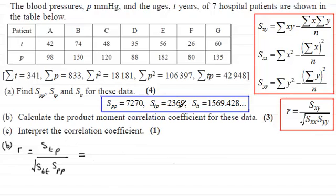STP was 2369 so you've got 2369 and that's all divided by the square root of STT which was 1569.428 and so on. And that's being multiplied by SPP which was 7270.